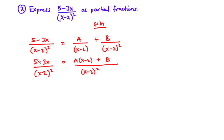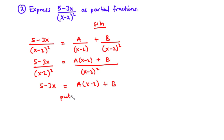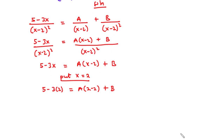Since we have common denominators, we equate the numerators: 5 minus 3x equals A times x minus 2 plus B. We have x minus 2 here, so putting x equals 2 makes A go to 0 and we can find B. Substituting: 5 minus 3 times 2 equals negative 1, and 2 minus 2 times A is 0. So B equals negative 1.